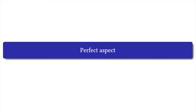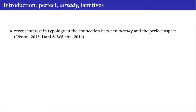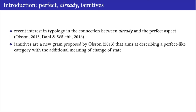The rest of this talk is divided into two big parts: perfect aspect and realis-irrealis mood. There has been recent interest in typology regarding the connection between the meaning of 'already' and perfect aspect, done by Olson in his master's thesis and Dalland-Vehli, who claimed that a new category called the yamitive develops as a consequence of an intermediate diachronic stage between the development of 'already' into perfect aspect.